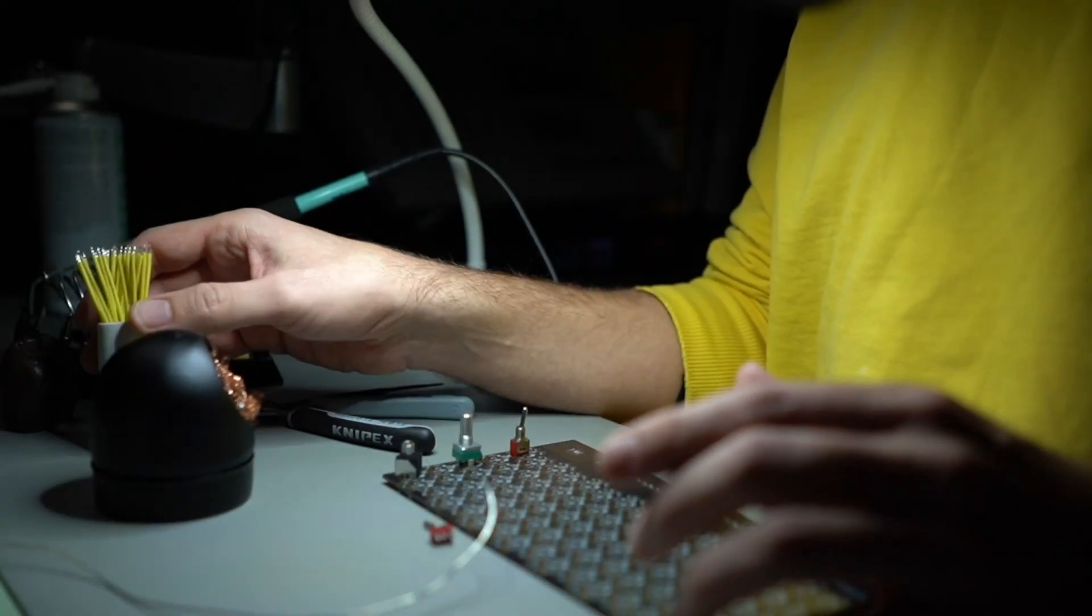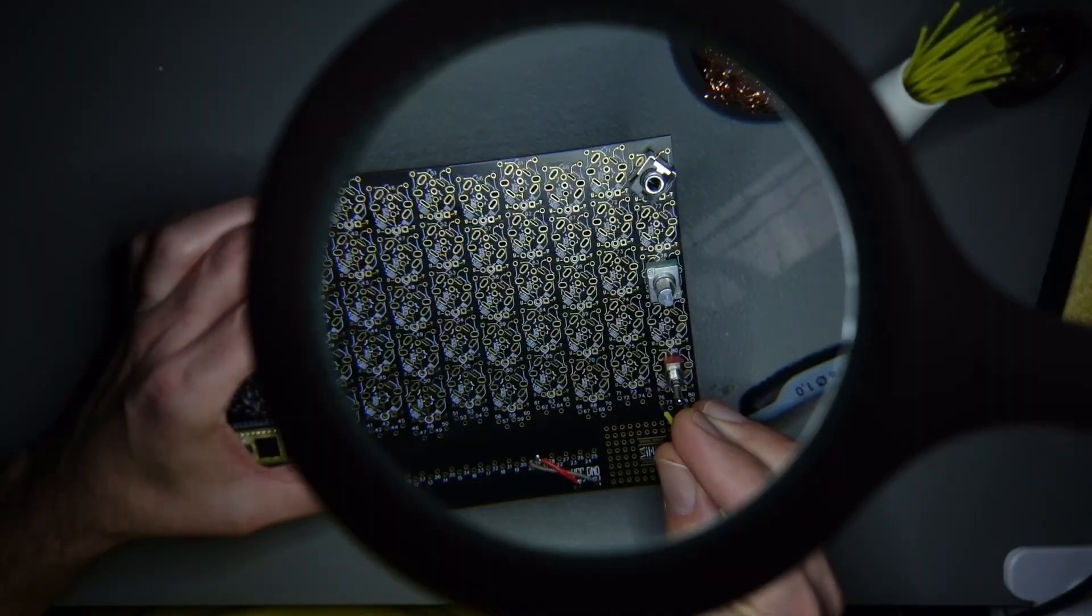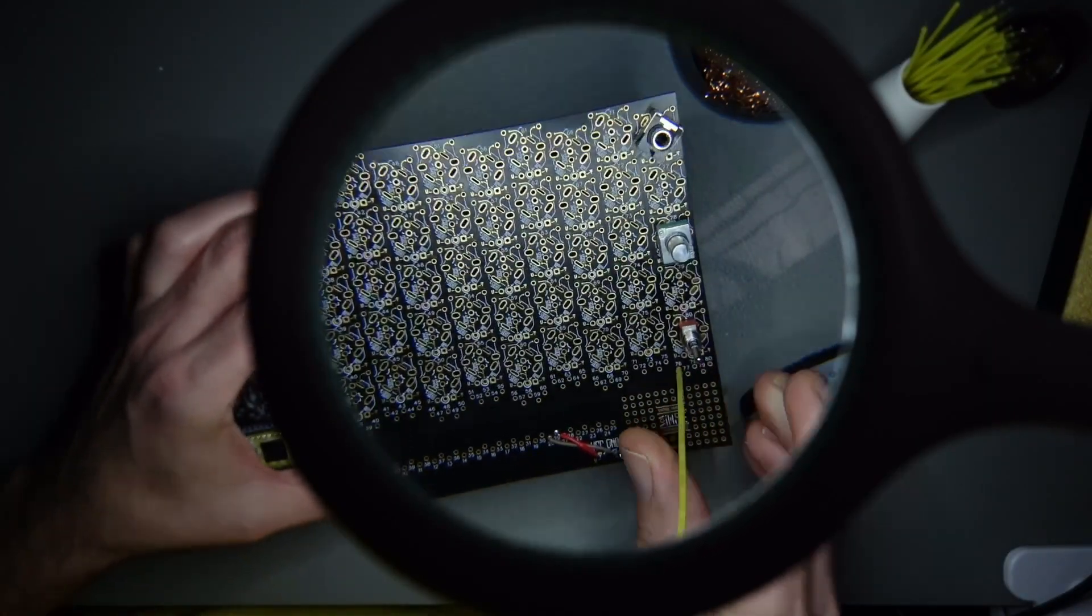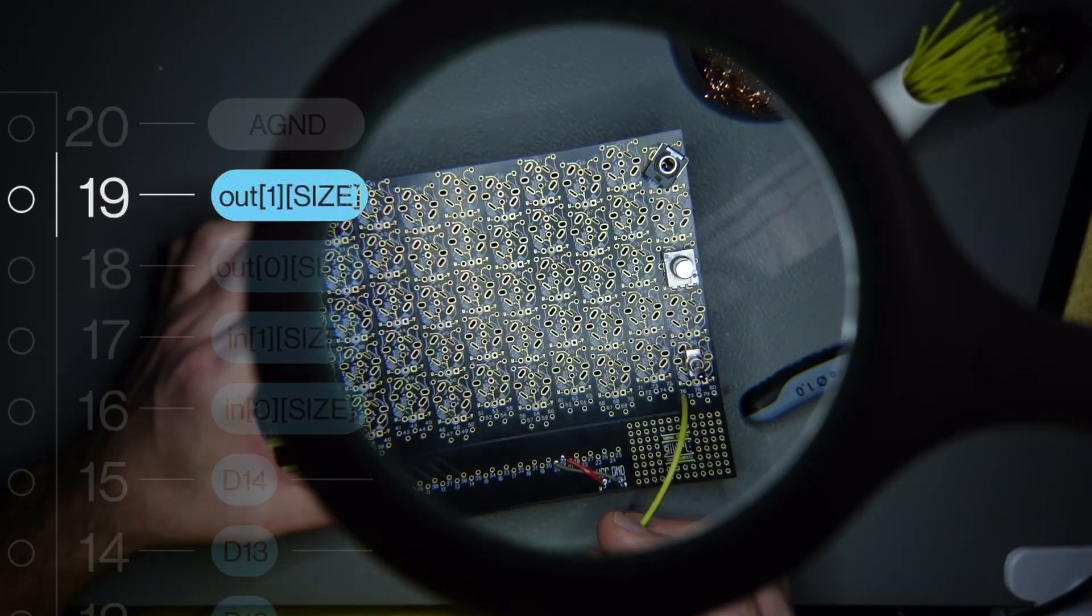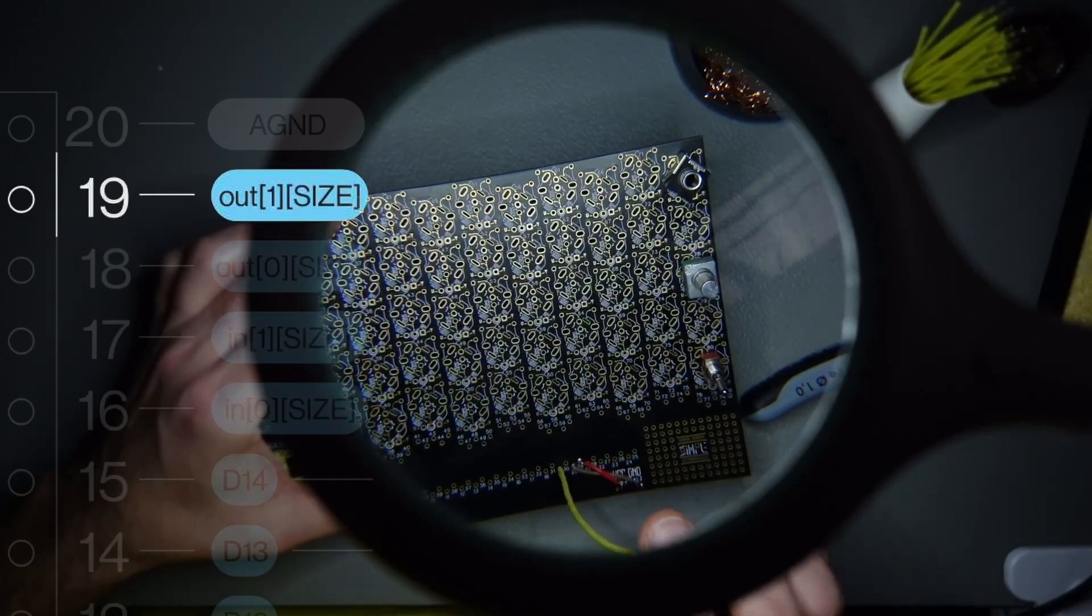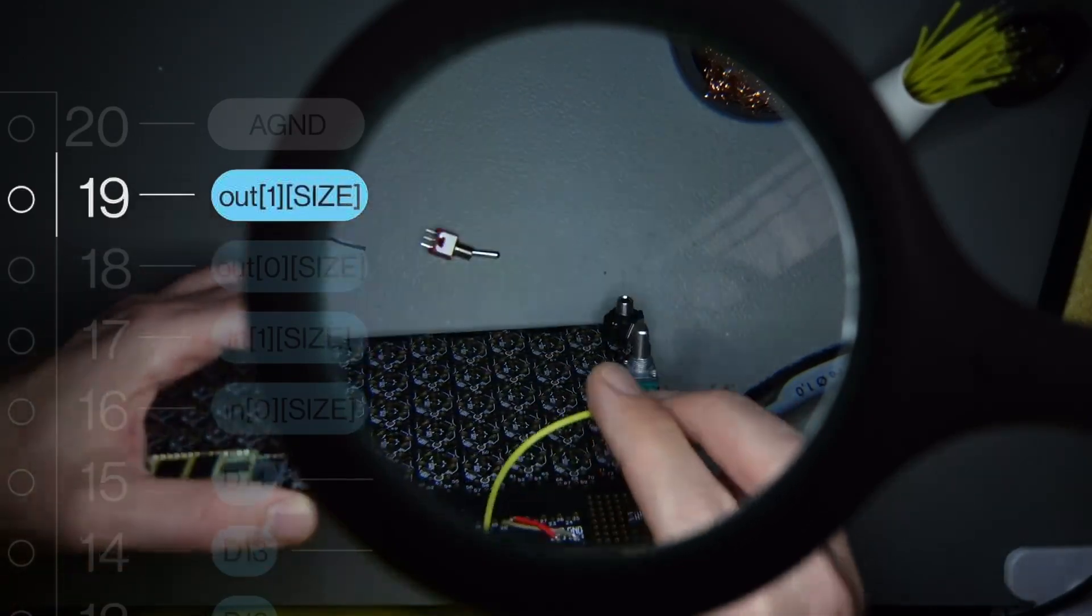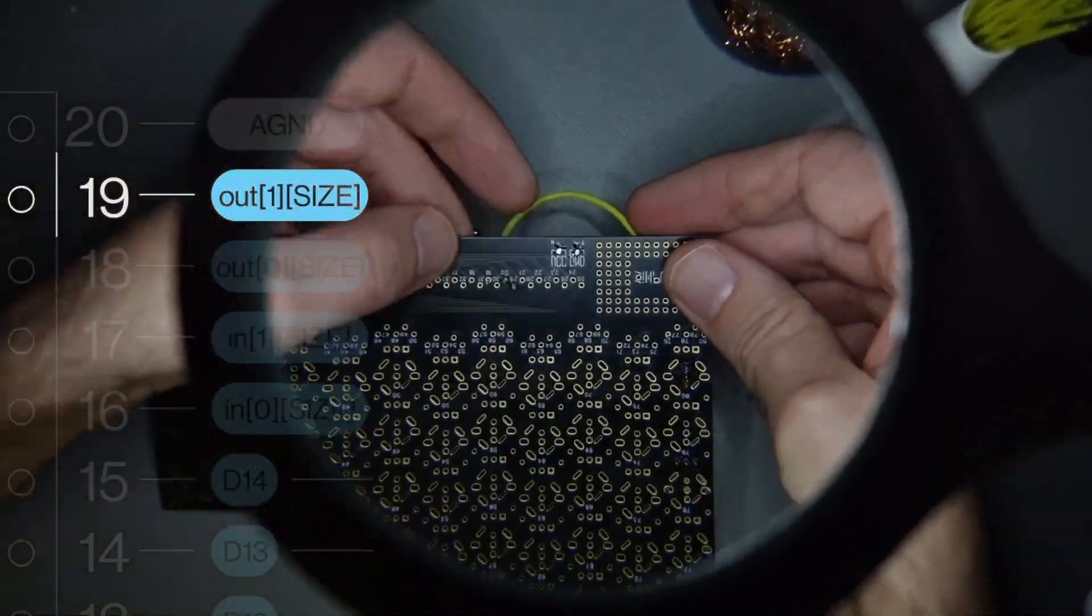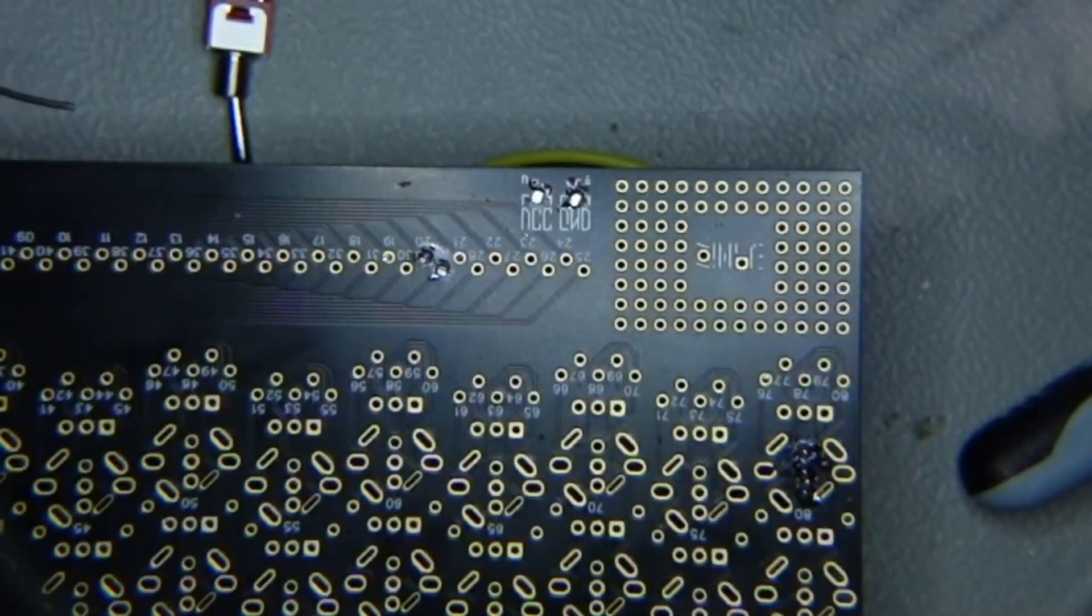So let's grab a yellow wire, so number 76. 76, and I want to connect it directly to 19, which is here. So let's make this connection, 76 to 19. I'm going to put it like this.